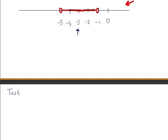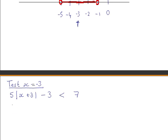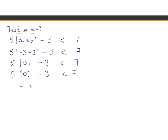We will test the value minus 3. Since this is part of our solution set, it should work out to be true when substituted into our original inequality: 5 times the absolute value of x plus 3 minus 3 is less than 7. Substituting in minus 3 for x, we get that minus 3 is less than 7, and this is true, as we expected.